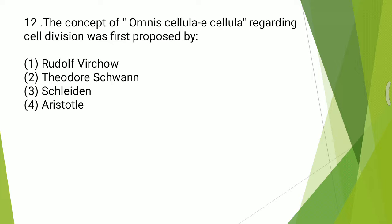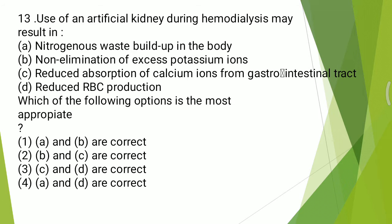Twelfth question: the concept of Omnis cellula e cellula regarding cell division was first proposed by Rudolf Virchow, Theodor Schwann, Schleiden, or Aristotle? The correct answer is the first option — Rudolf Virchow.